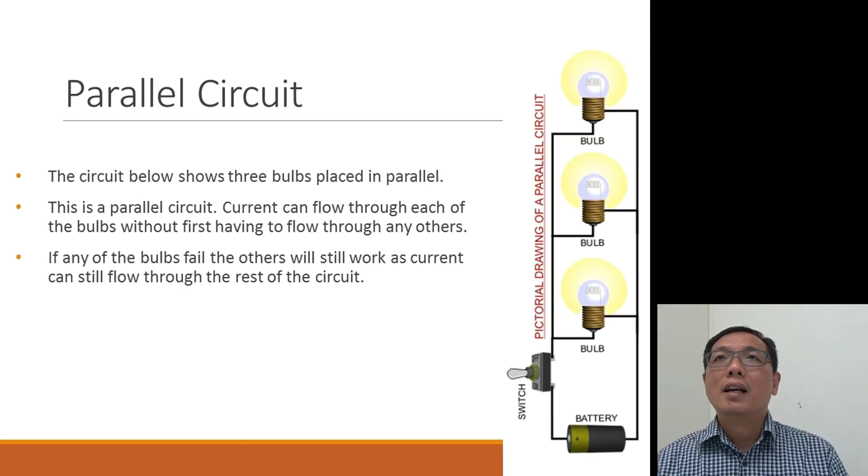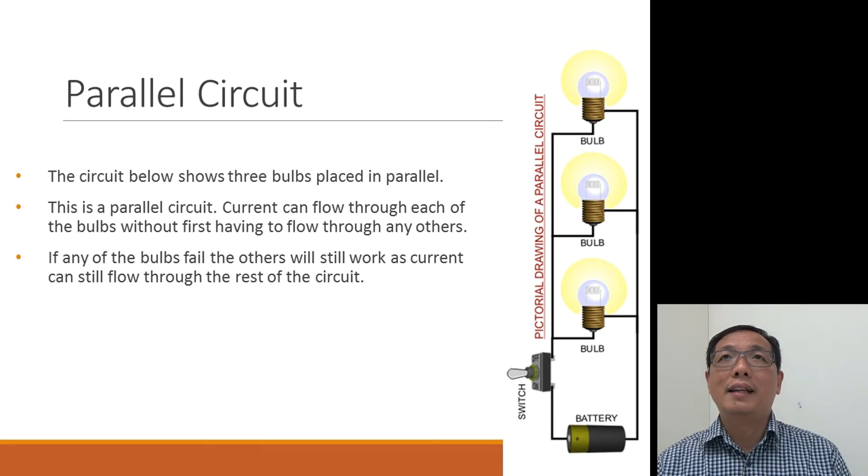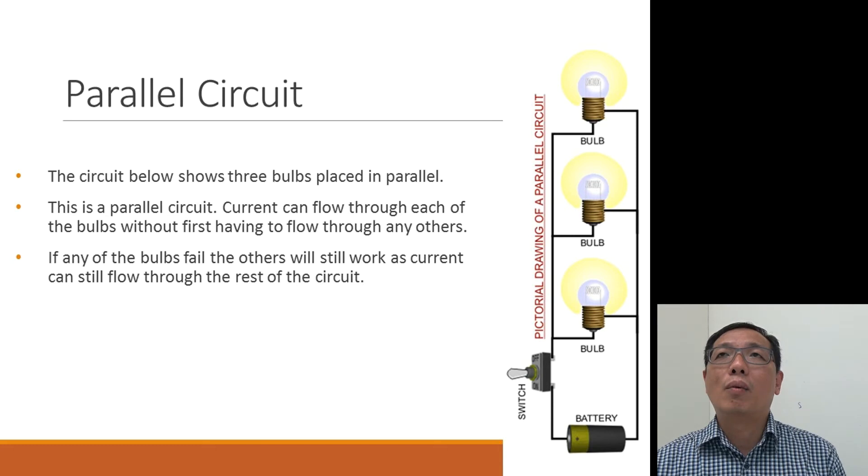In parallel circuit, the three of them will run. And if one of the bulbs is blown, the other two bulbs will still work. And this is a better one, which is what we normally use in our home lighting circuit.